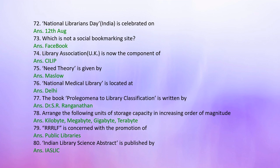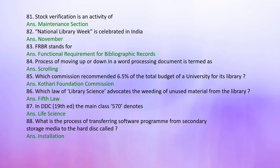Question 76: National Medical Library is located at — Answer: Delhi. Question 77: The book Prolegomena to Library Classification is written by — Answer: Dr. S.R. Ranganathan. Question 78: Arrange units of storage capacity in increasing order of magnitude — Answer: Kilobyte, Megabyte, Gigabyte, Terabyte. Question 79: RRRLF is concerned with the promotion of — Answer: Public libraries. Question 80: Indian Library Science Abstract is published by — Answer: IASLIC. Question 81: Stock verification is an activity of — Answer: Maintenance section. Question 82: National Library Week is celebrated in India in — Answer: November. Question 83: FRBR stands for — Answer: Functional Requirements for Bibliographic Records.